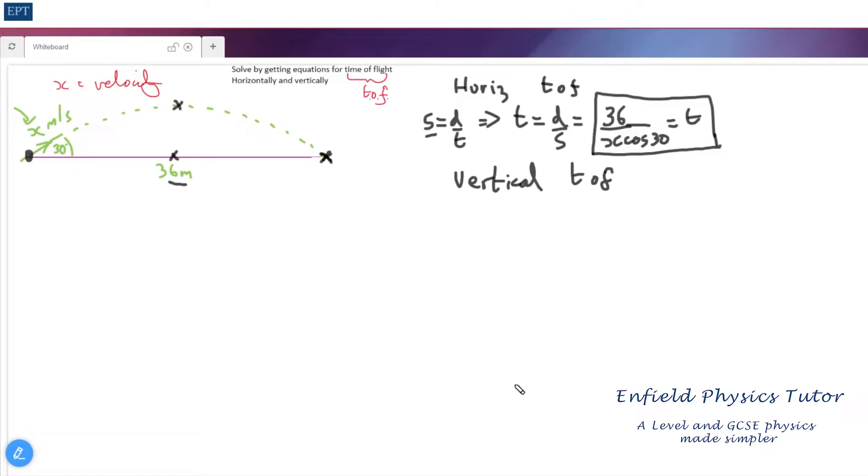The way to do that is to consider that we know velocity equals initial velocity plus at. At the top the final velocity is going to be zero, so we set that one to zero. The initial velocity is going to be x sin(30), and then we've got to add that to the value of the acceleration which is negative, so minus 9.8 times t. So let's rearrange this. We're going to get that 9.8t equals x sin(30), which means that t equals x sin(30) over 9.8. But remember that's only the time to the top, so our time of flight is going to be two times that: 2x sin(30) over 9.8.